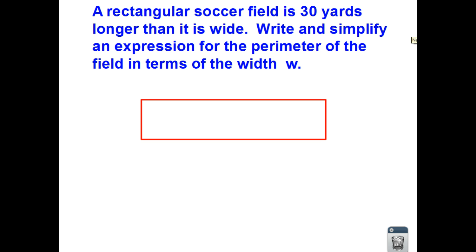Here we have a word problem. It says, a rectangular soccer field is 30 yards longer than it is wide. Write and simplify an expression for the perimeter of the field in terms of the width w.